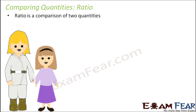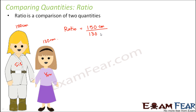So in this case, let us say this is your sister and this is you. Sister's height is 150 centimeters and your height is 130 centimeters. If I ask you what is the ratio of your sister's height to your height, the ratio would be 150 centimeters divided by 130 centimeters, which is 15 by 13. A ratio is always represented as 15 is to 13, showing the ratio of the heights of the two is 15:13.